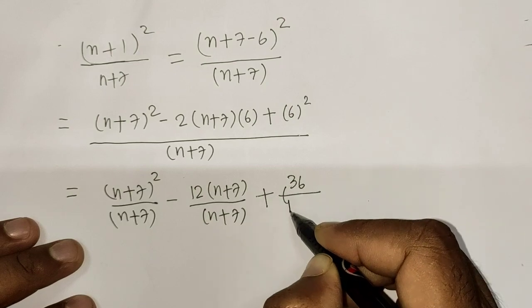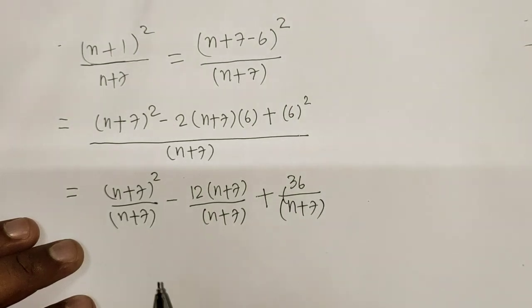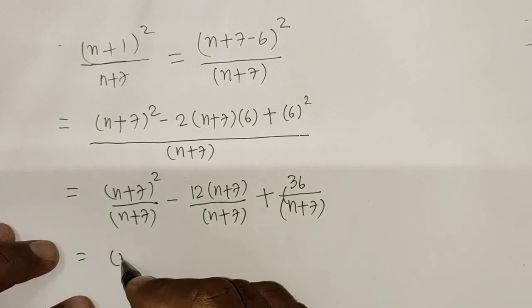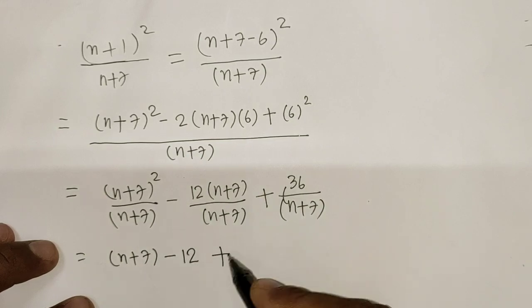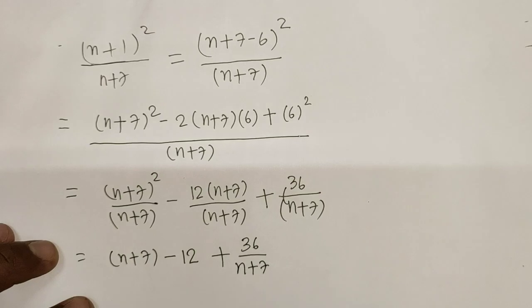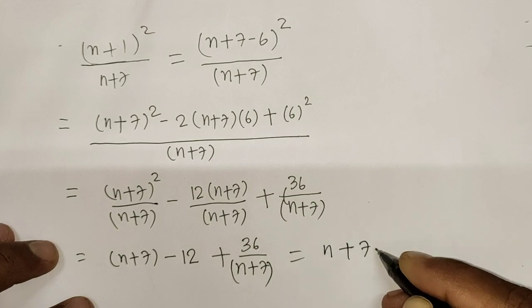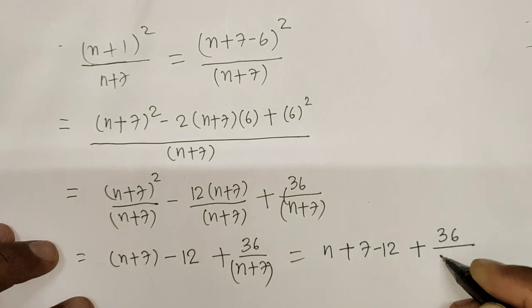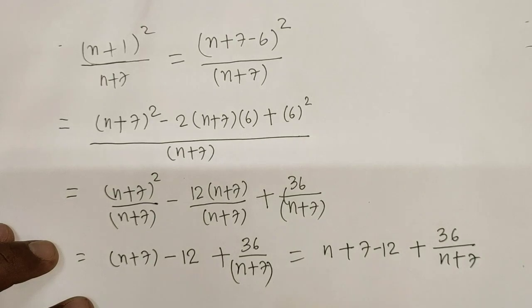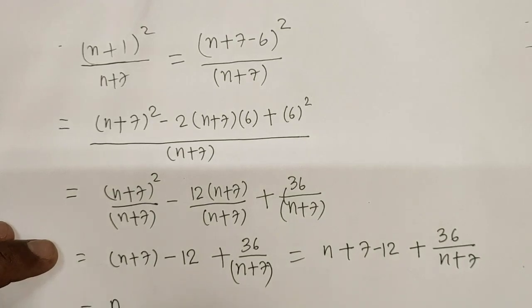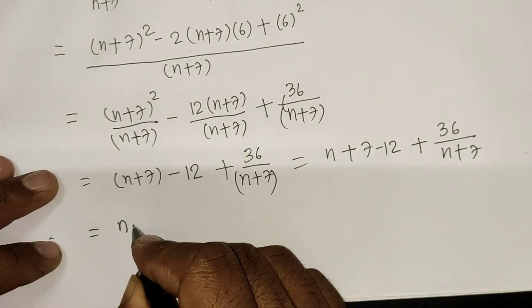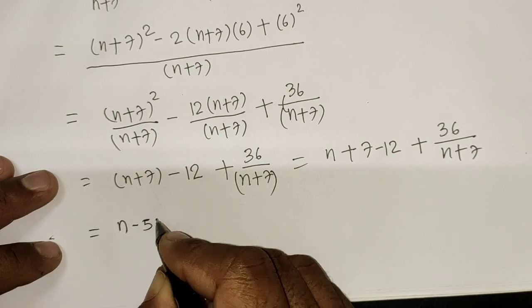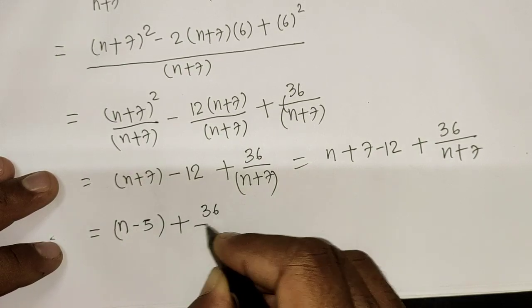If you see here, this is going to cancel and we're left with (n+7) minus 12 plus 36/(n+7). So obviously if you simplify this equals (n+7) which equals n+7-12 equals (n-5) + 36/(n+7).